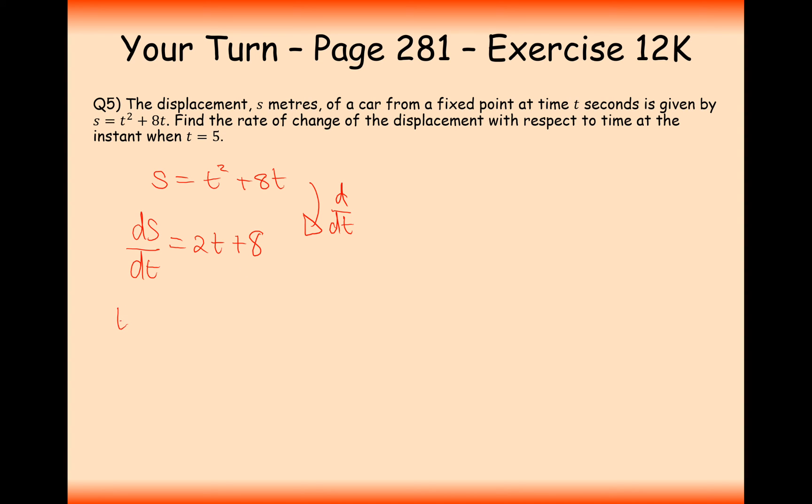So it's going to be ds by dt equals 2t plus 8. Now, when t equals 5, we're going to get ds by dt equals 18. Now, this is quite interesting, actually, because the rate of change that you displace by is actually used for the velocity.